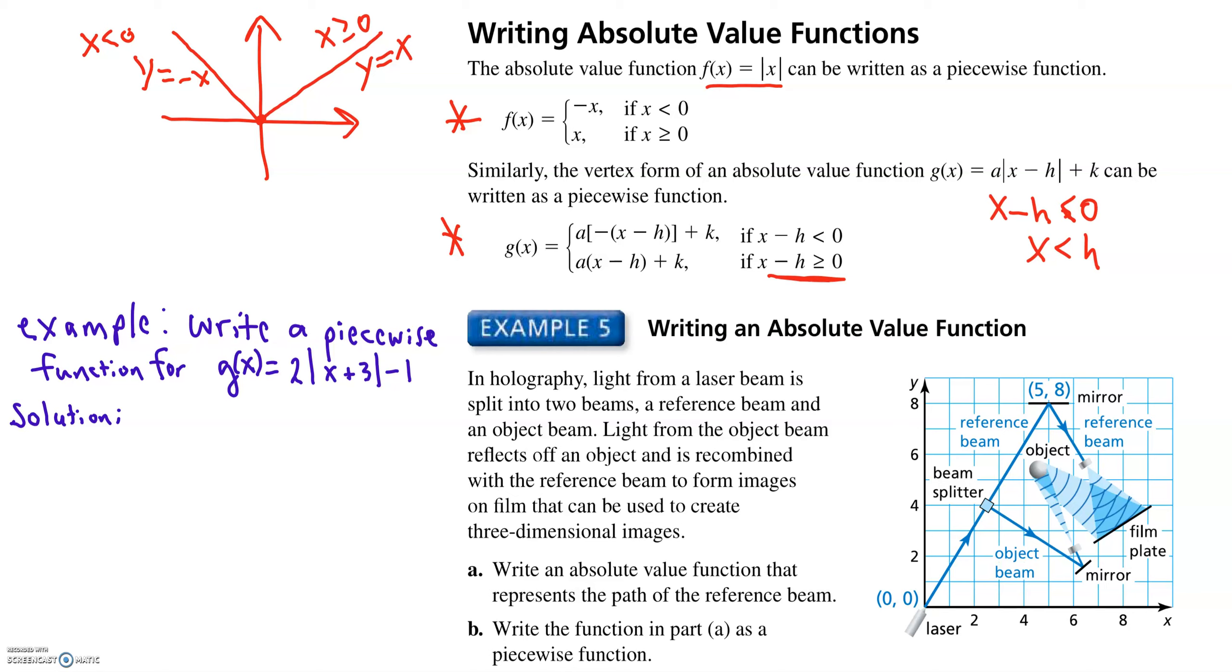But again, if x minus h is less than 0, if x minus h is negative, you have to do the opposite of that to turn it into a positive.